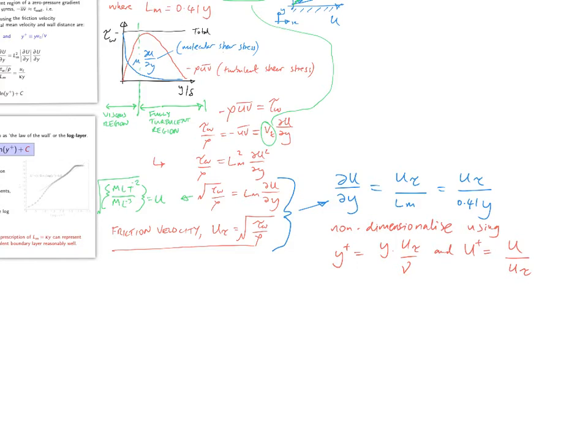So then translating this equation, our universal law, into non-dimensional terms, we get this expression here, where we have simply substituted y using this expression here, so y is equal to y plus times nu divided by u tau. And u, using this expression here, so where we have u here, we replace it with u plus divided by u tau. And if we simplify this, then we get this.